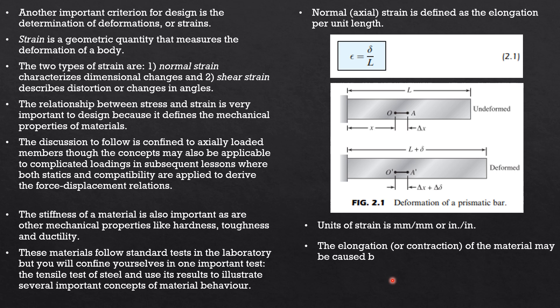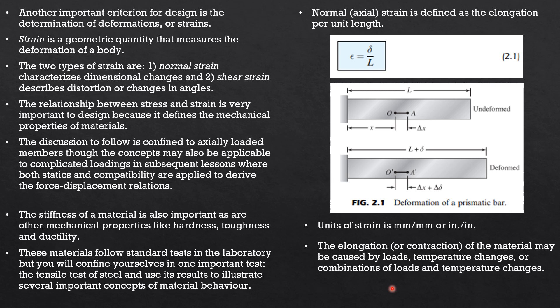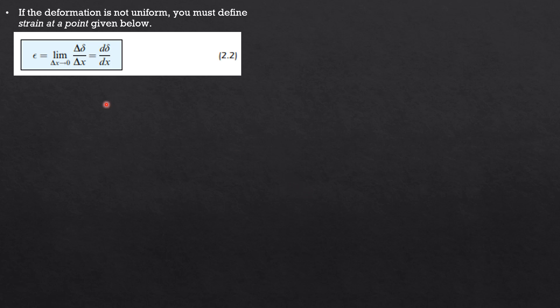Elongation or contraction of the material may be caused by loads, temperature changes, or a combination of loads and temperature changes. If the deformation is not uniform, you must define strain at a point. For a situation where deformation is not uniform, the strain is defined as the limit of delta d over delta x as delta x approaches zero.